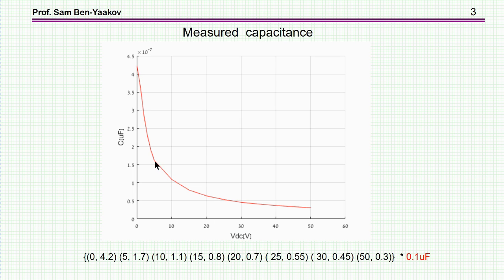You see in 5 volts, it only drops to 1.5 times 10 to the minus 7. And then as we go, this is a 63 volt capacitor, so as we go to say 50 volt, it's really becoming a low capacitor. It's a very large voltage dependence.